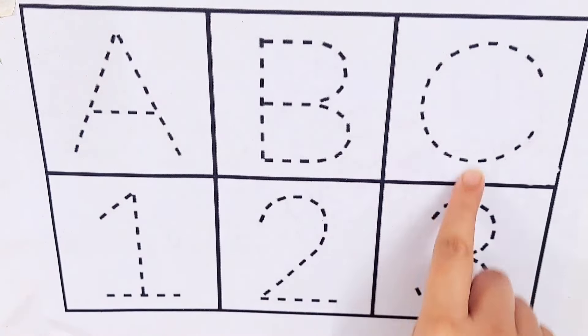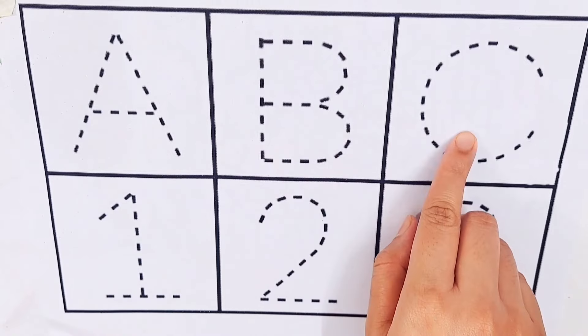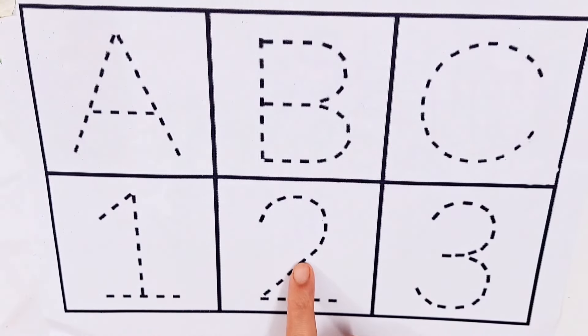Let's try to learn some alphabets and numbers. A, B, C. One, two, three.